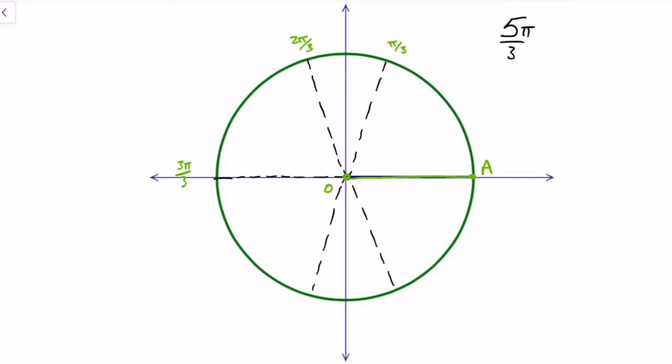So just remember that 3 pi over 3, you can always simplify these, and I get pi. The next one's 4 pi over 3, and the last one is 5 pi over 3. So that is the terminal arm right there. So I can mark in P, and there's OP, and we just have to sketch the angle in.